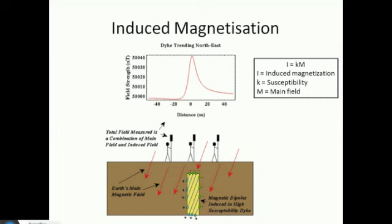The shape of the anomaly depends on two things: the orientation of your survey — whether you're going north-south or east-west — and the latitude that you're at. Whether you're at the equator or at the North Pole will actually change the shape of your anomaly. Magnetics is a little more complicated than gravity — in gravity you get the same anomaly wherever you are, but in magnetics you get quite a different anomaly.